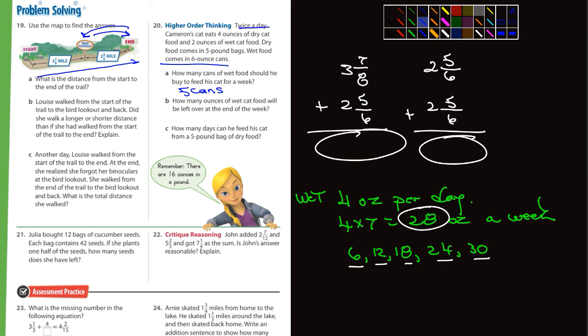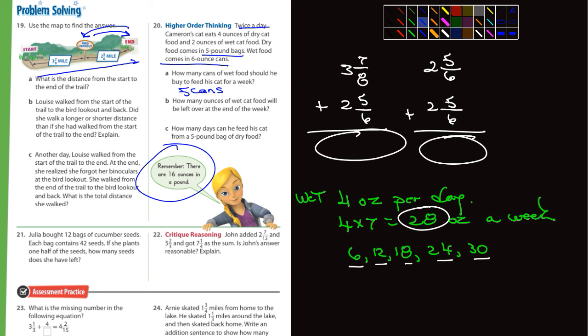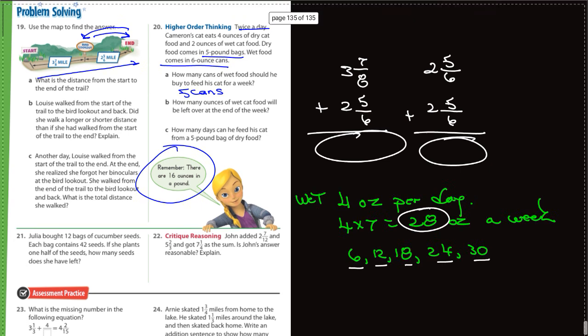How many ounces of wet cat food will be left over at the end of the week? What's the difference between 28 and 30? And then, how many days can he feed his cat from a 5-pound bag of dry food? Remember, there are 16 ounces in a pound, and the dry food comes in a 5-pound bag. Think about how many ounces he eats in a day.